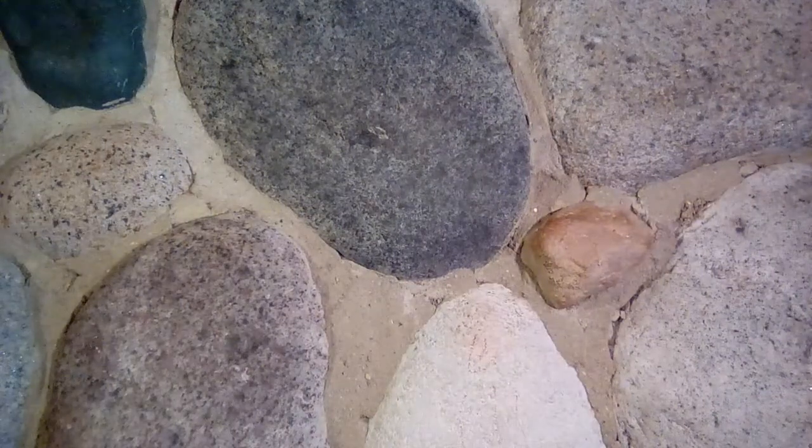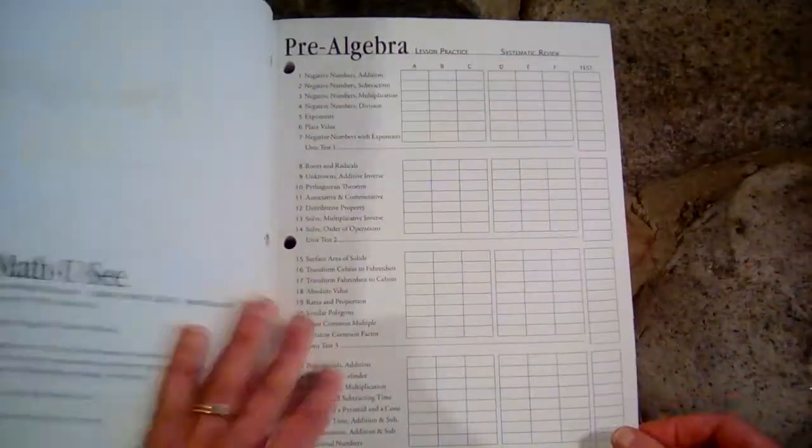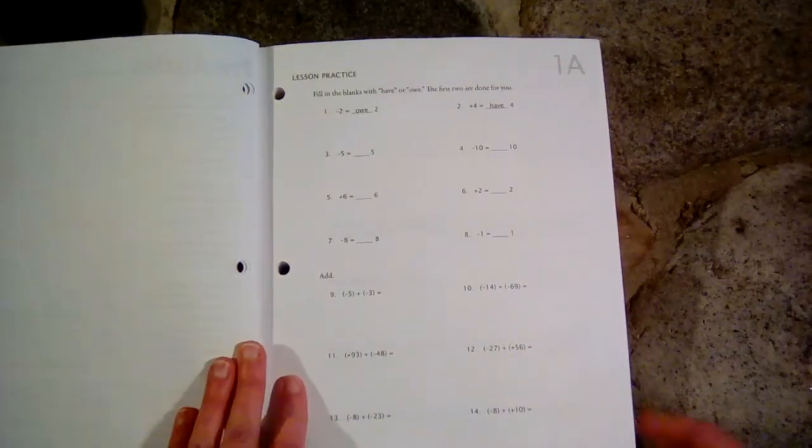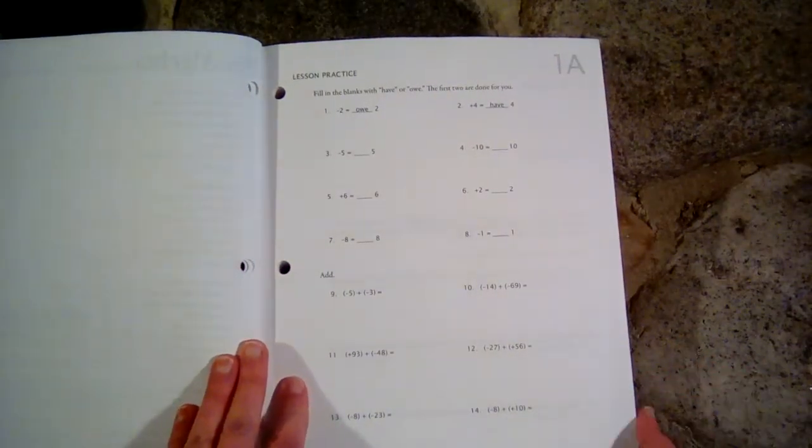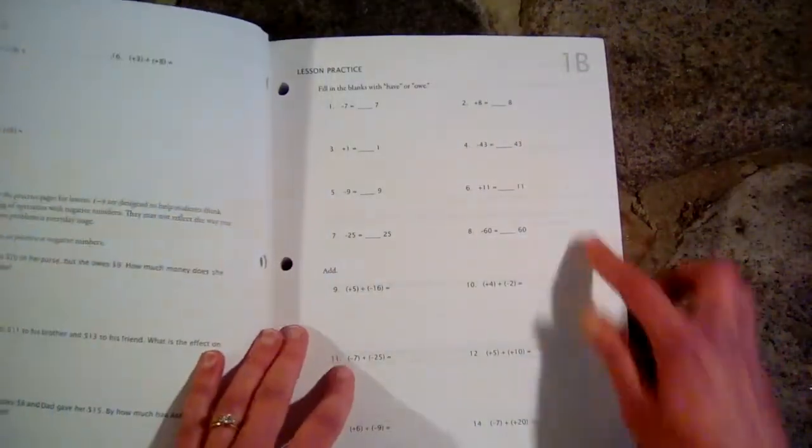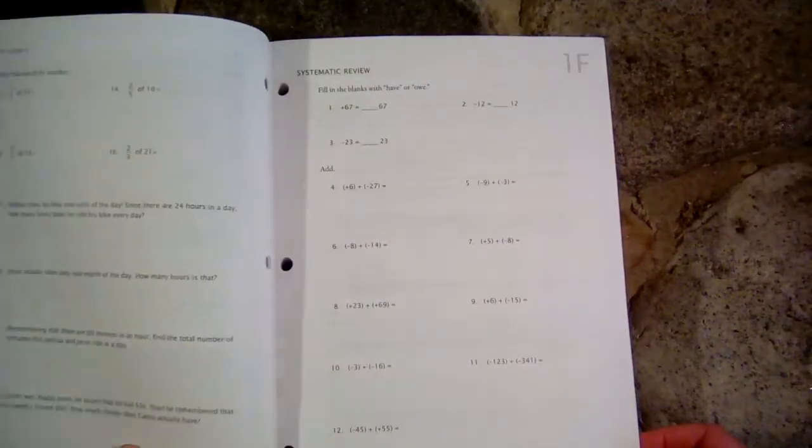So let me show you this student text, and we'll go over how many worksheets there are per lesson. So the student will watch the DVD and then there are, I believe, seven worksheets. So we have their labels A, B, C, D, E, F.